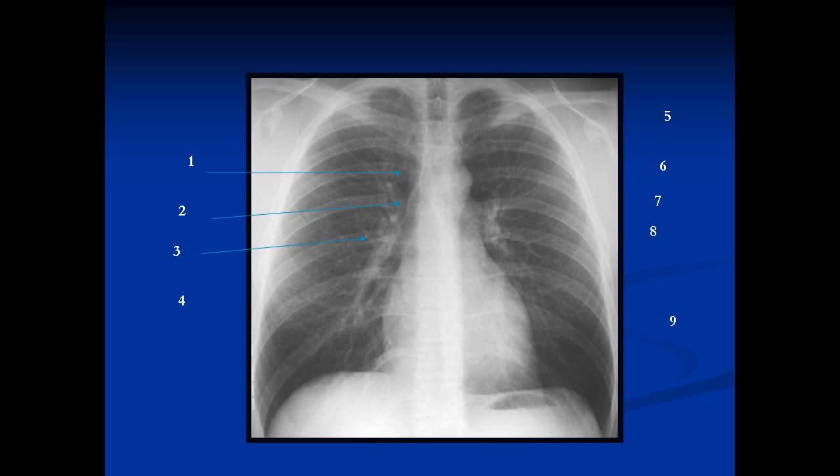Next we'll talk about the right hilum. On the right side, the pulmonary artery sits in front of the bronchus, and the two of them branch together out into the lung. Everywhere in the lung that you see a bronchus, you will see an artery, because they're right next to each other. On the right side, the two of them can be seen branching together out into the lung, and the artery is not separate from the bronchus on this view.